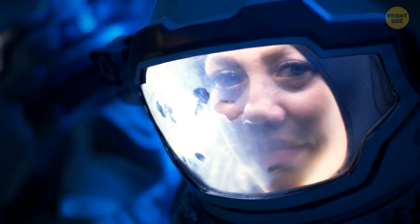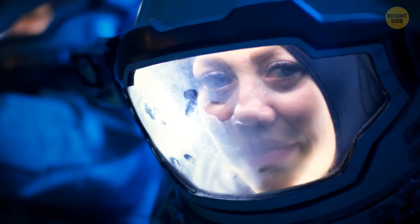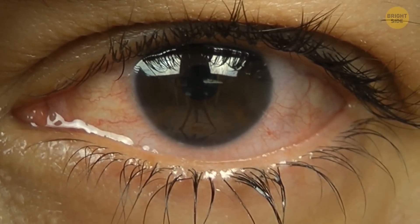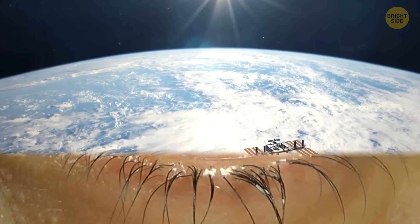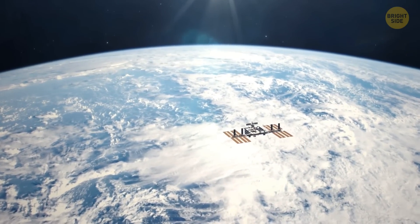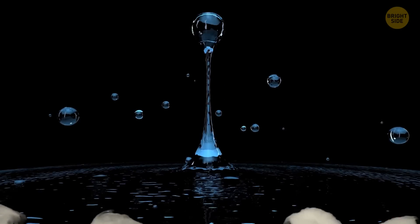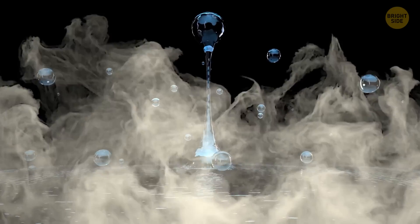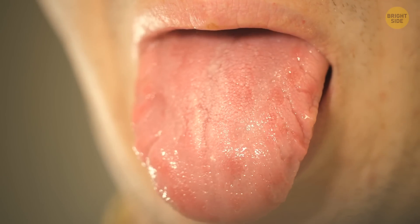If you watch a very touching movie in space and start crying, your tears won't run down. They will gather around the eyeballs. Your eyes will get too dry, so you'll feel like they're burning. Any exposed liquid on your body will vaporize, including the surfaces of your tongue.